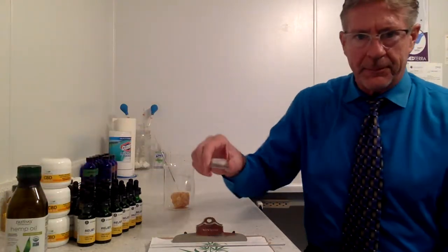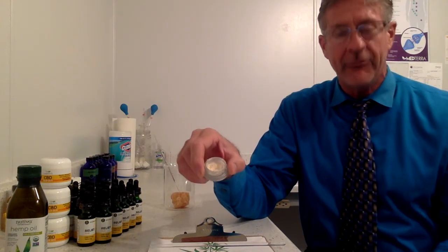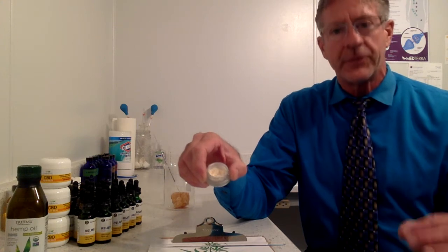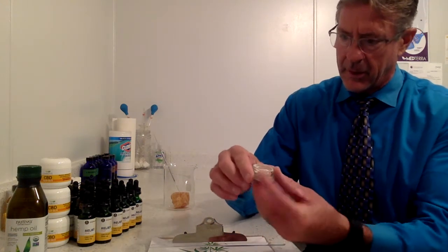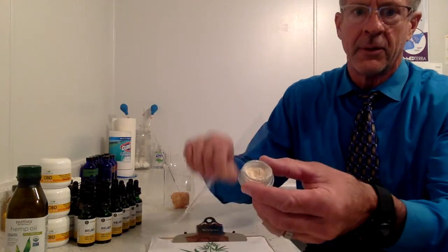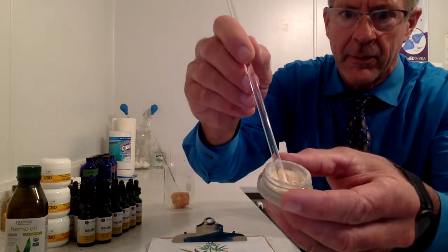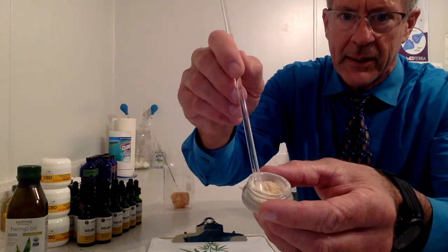Two is an isolate. An isolate is for those who prefer not to have any other cannabinoid oil, just the CBD all by itself. It's usually cooked down into powder. You can kind of see this, it's just a powder.